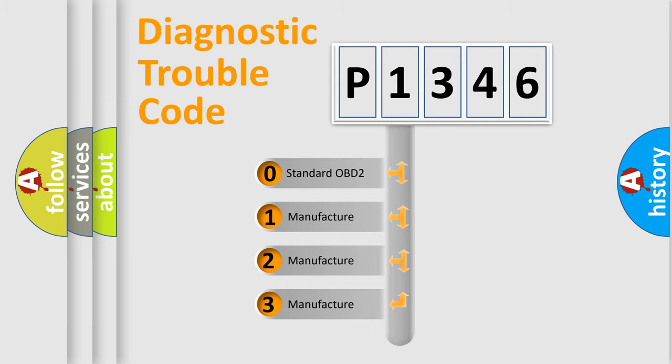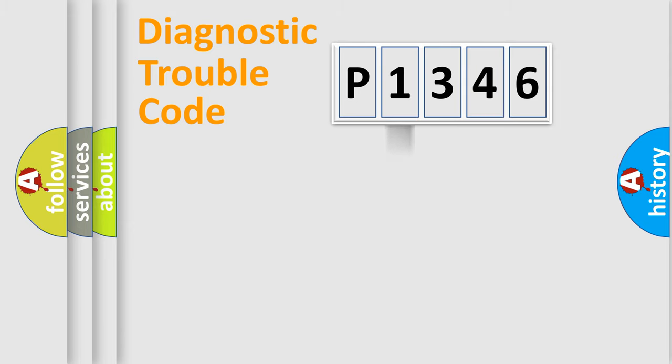If the second character is expressed as zero, it is a standardized error. In the case of numbers 1, 2, 3, it is a manufacturer-specific expression of the car-specific error.